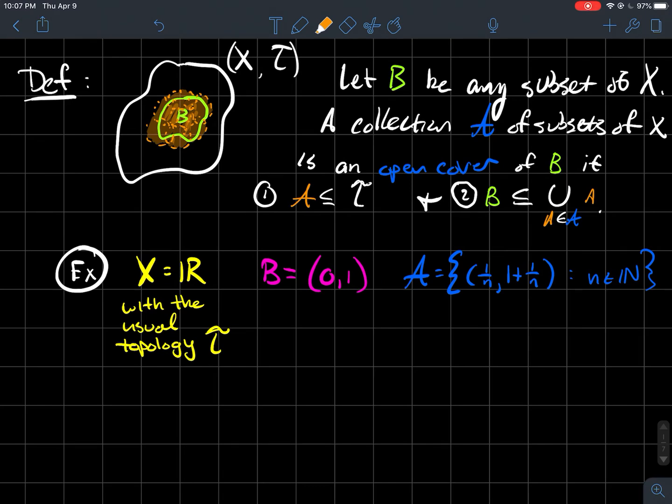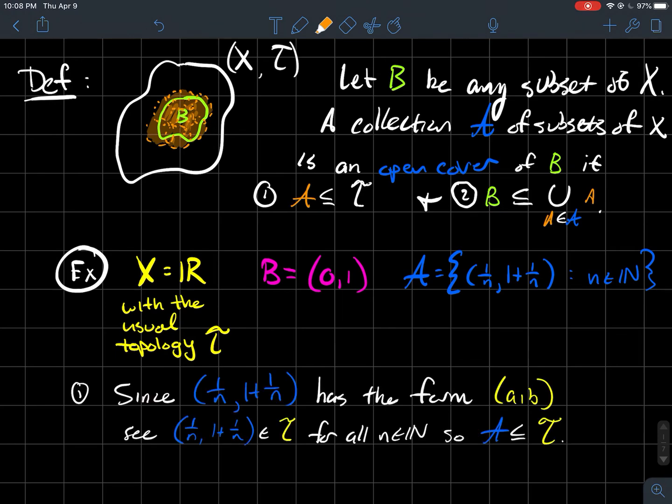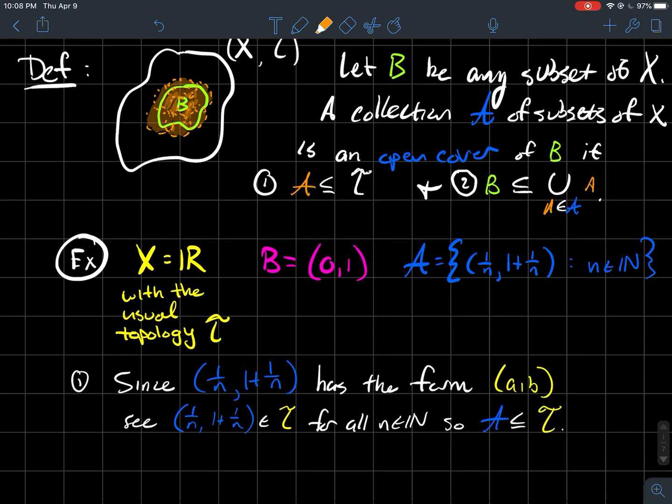Then I claim that that is an open cover for B. So how would you show that? I just want to show you that you have to check one and two above in the definition. For number one, notice one over N, one plus one over N with parentheses on the left and right. That's got the form A comma B with parentheses.